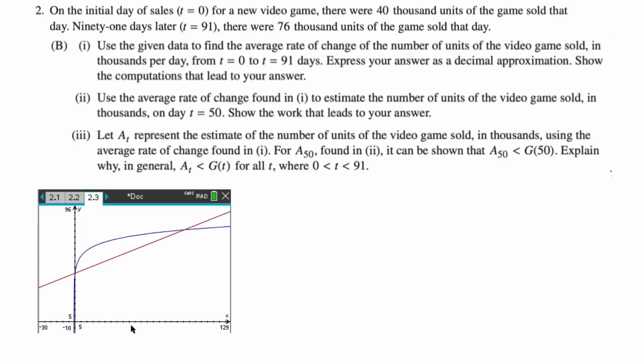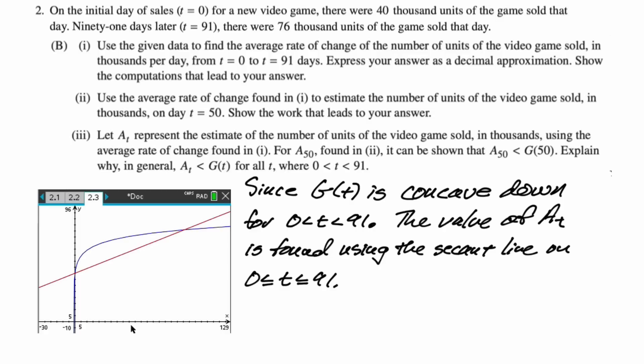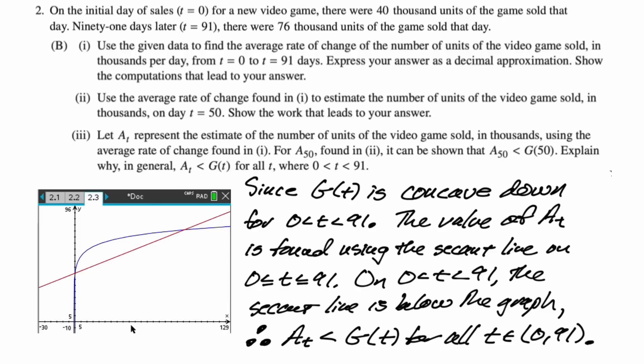I just graphed this scenario just to see what was going on. And here we can see our model is concave down everywhere. But in particular, it's concave down between 0 and 91. And so because of that, a secant line is below the model, right? Because a secant line is always below the curve when the curve is concave down. So I'm just going to basically write that up and say that is why plugging into the secant line will always give us an underestimate of the model's value. G(t) is concave down. The value of A_t is found using the secant line between 0 and 91. On 0 to 91, the secant line is below the graph. Therefore, A_t is less than G(t) for all t between 0 and 91. You want to reference using the secant line, reference concavity, and then make a statement.